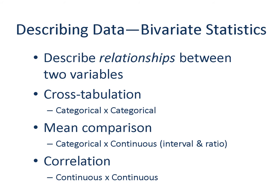So far we looked at the trend in one variable. Now, what if we are interested in the relationships between two variables? In that case, you will employ bivariate statistics. There are three types depending on the nature of the variables: if you are looking at the relationship between two categorical variables, you will use cross-tabulation. If you are summarizing a continuous variable by a categorical variable, you will employ mean comparison. When looking at the association between two continuous variables, you will estimate the correlation. We will go over each with examples.